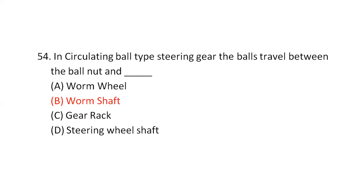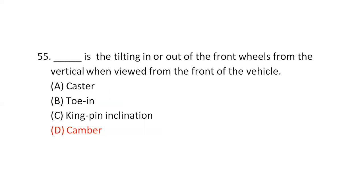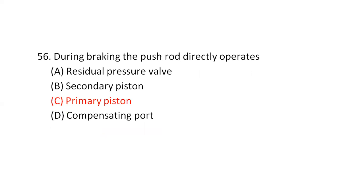In circulating ball type steering gear, the balls travel between the ball nut and — option B — the worm shaft. The tilting in or out of front wheels from the vertical when viewed from the front of the vehicle is called camber. Option D.